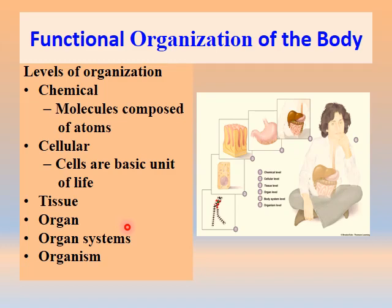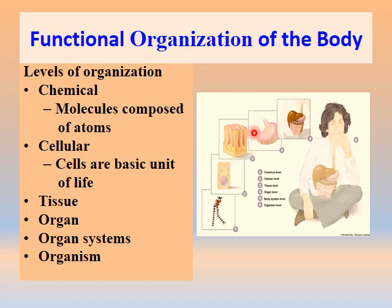An organism is a collection of organ systems working in a coordinated manner. So in all, if you see the human body or the body of any other organism, there are six levels of organization: the molecular level, then the cellular level, followed by the tissue level, then the organ level, and then the organs form organ systems.